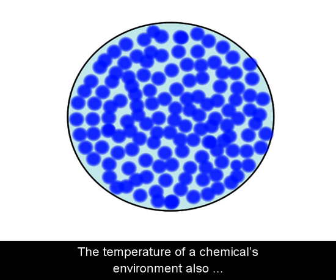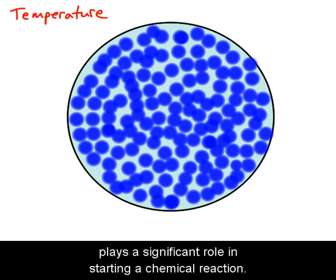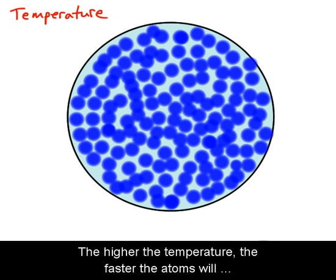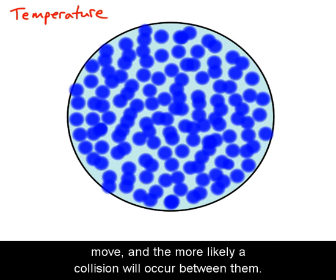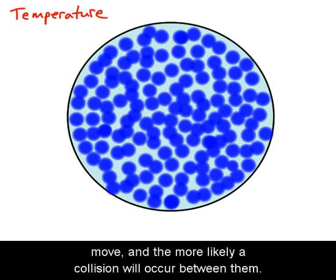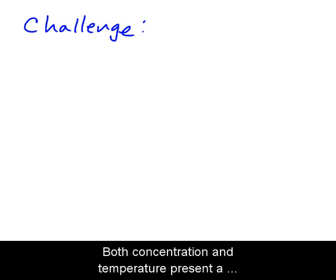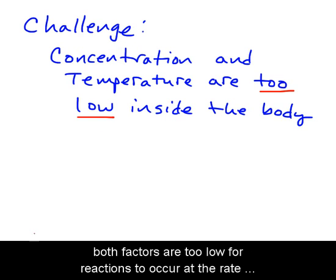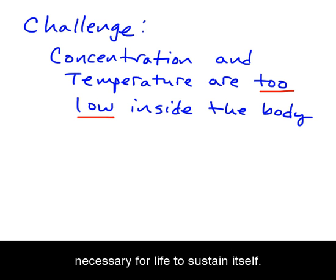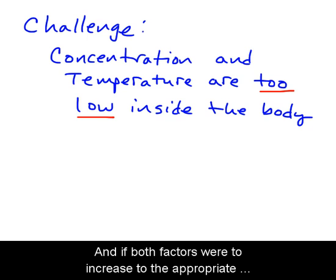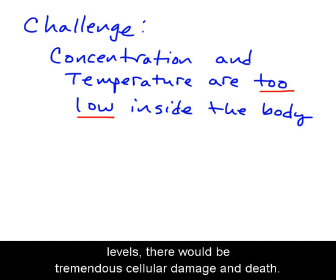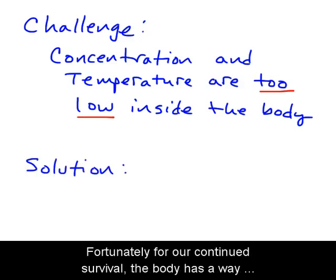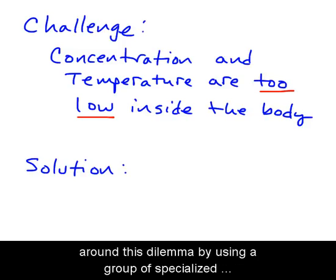The temperature of a chemical's environment also plays a significant role in starting a chemical reaction. The higher the temperature, the faster the atoms will move and the more likely a collision will occur between them. Both concentration and temperature present a challenge to reactions inside the human body, because both factors are too low for reactions to occur at the rate necessary for life to sustain itself. And if both factors were to increase to the appropriate levels, there would be tremendous cellular damage and death.